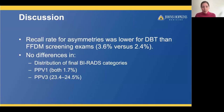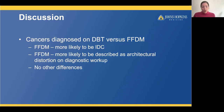In the discussion, we compared outcome metrics for asymmetries recalled from DBT versus FFDM. The recall rate for asymmetries was lower for DBT than FFDM screening exams — 2.4% versus 3.6%. We did not find any differences in the distribution of final BI-RADS categories, PPV1, or PPV3. We found some differences in the cancers diagnosed: in the FFDM group, these were more likely to be IDC, whereas in the DBT group over 20% represented ILCs. Also in the FFDM group, cancers were more likely to be described as architectural distortion on diagnostic workup.